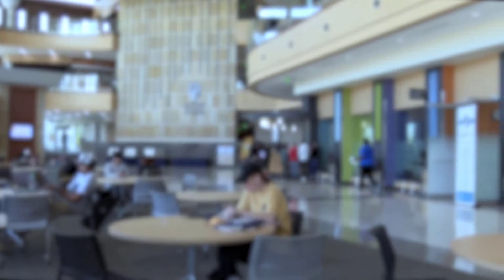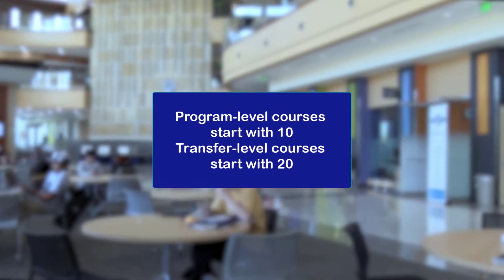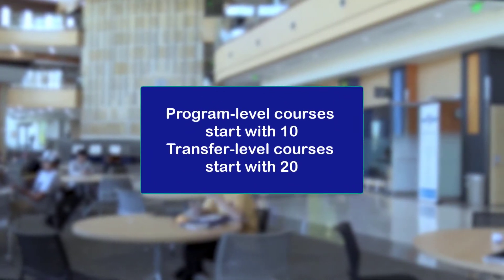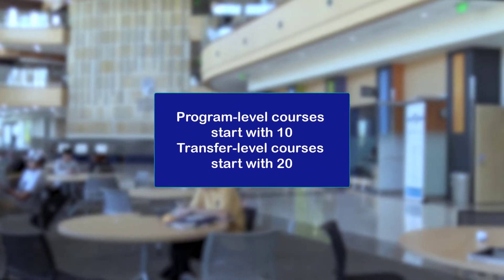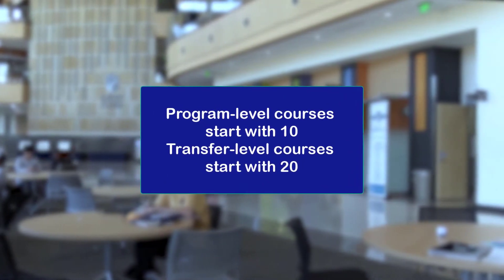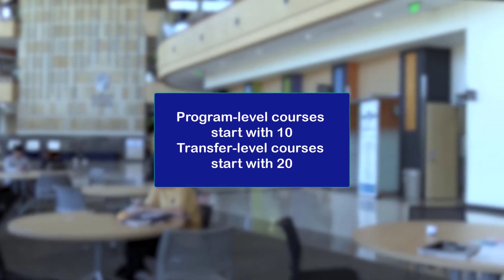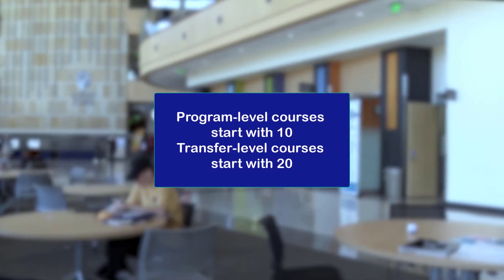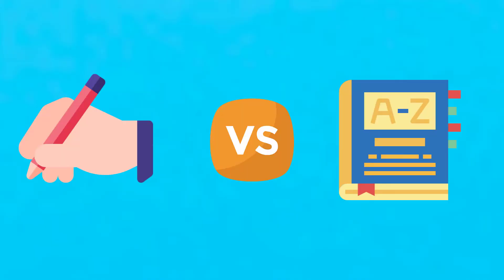Tip number three: if you are interested in transferring to a four-year institution after completing your two-year program, you will need to take the general education 20-level course options listed in your Degree Progress Report. For example, Written Communications vs. English 1. Which class you take depends on if you plan to transfer or not.